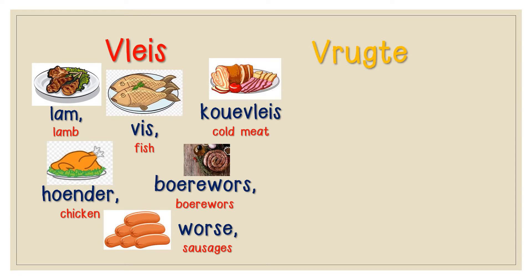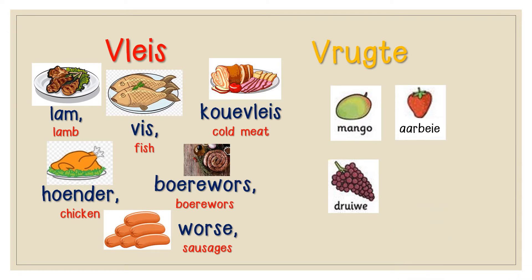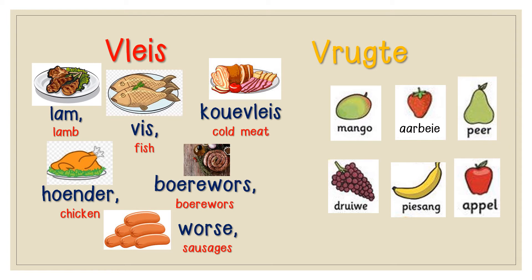Vrugte — Fruit. Druiwe — Grapes. Mango — Mango. Aarbeie — Strawberry. Piesang — Banana. Appel — Apple. Peer — Pear.